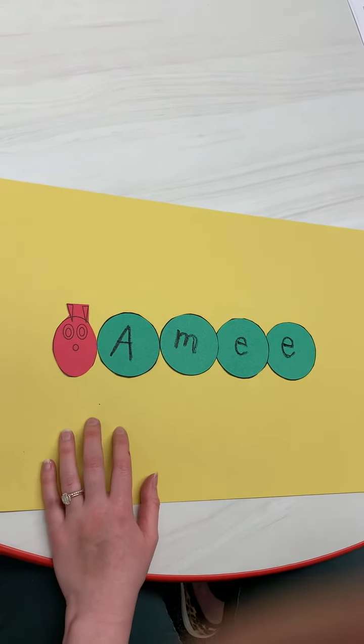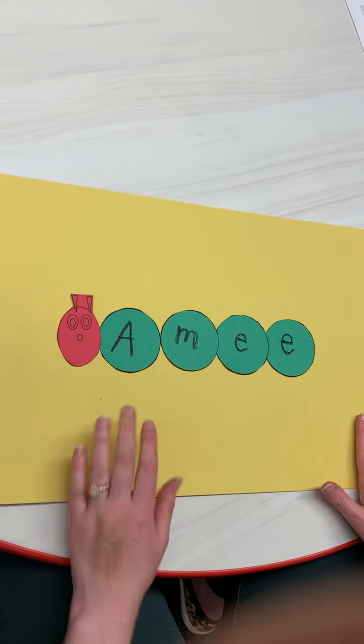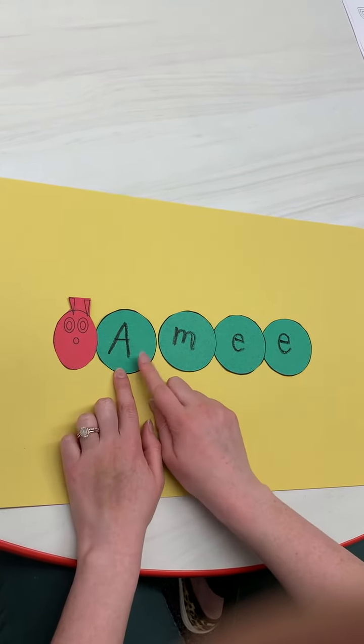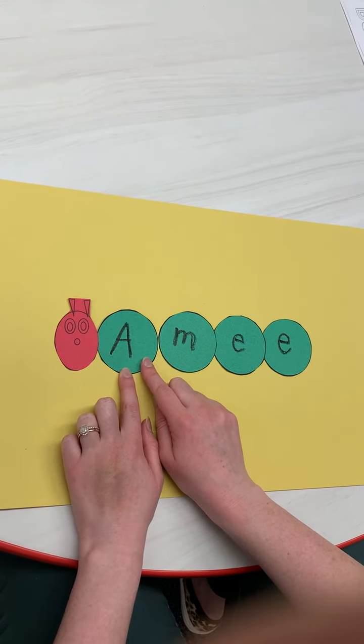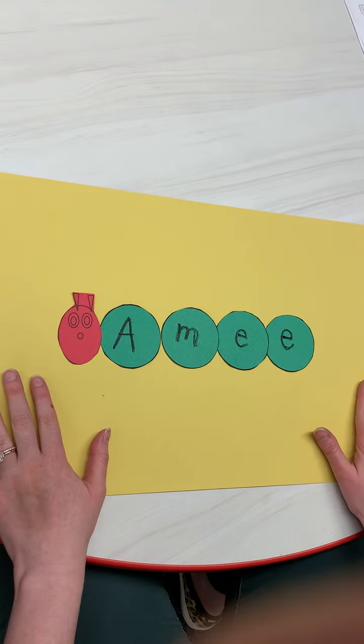Or if your child needs a little bit more challenge, like I said, you could just have them write themselves and then put it in order. Make sure if they're writing it themselves that they're using an uppercase for the very first letter and then lowercase for the rest. Yeah, and so they'll just glue it on this...